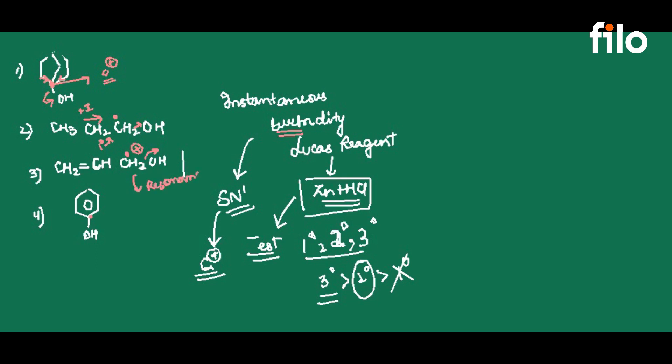So what is the resonance? Resonance is stabilized by the carbocation. So what is the resonance structure? CH, CH, CH.